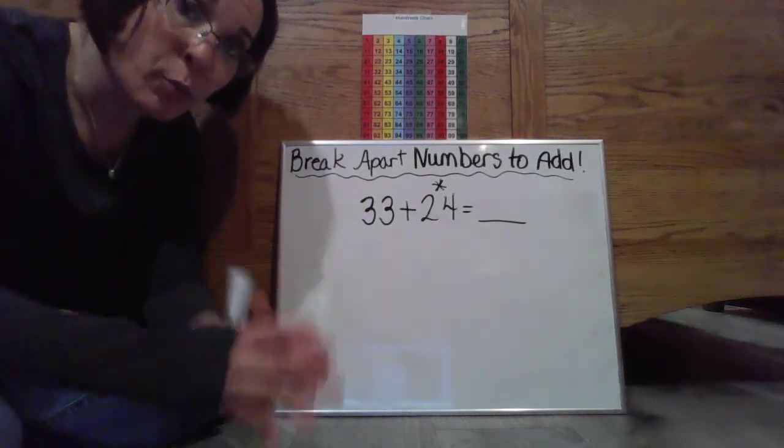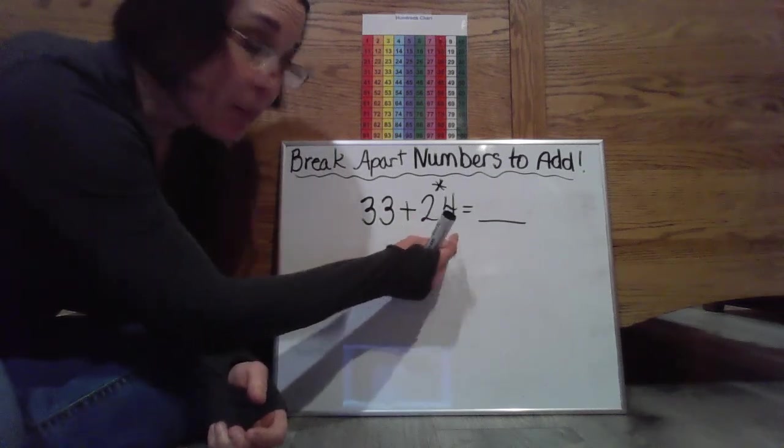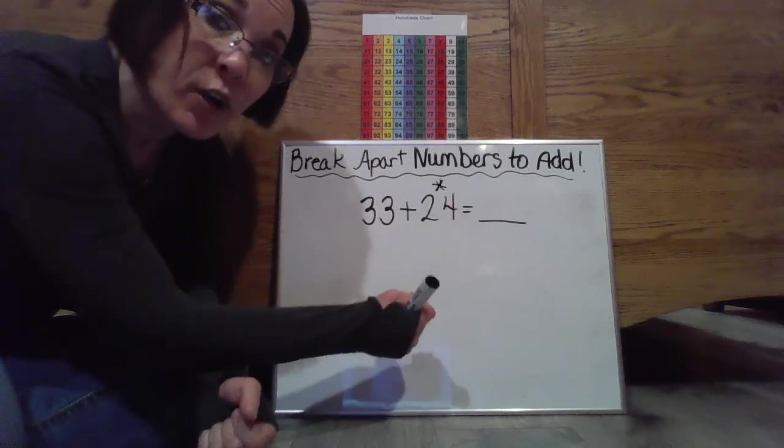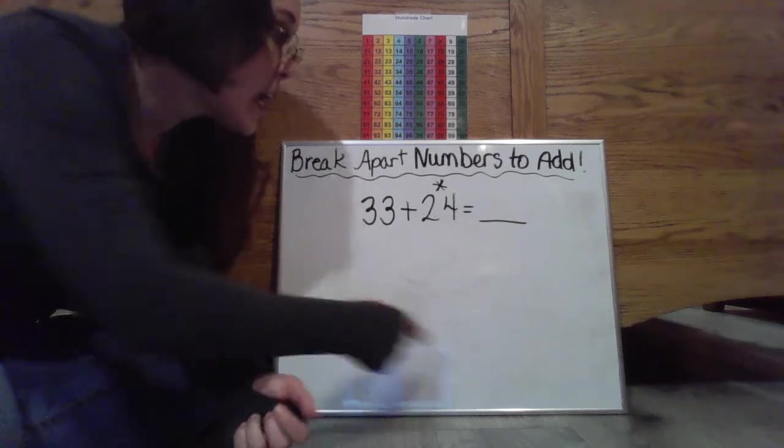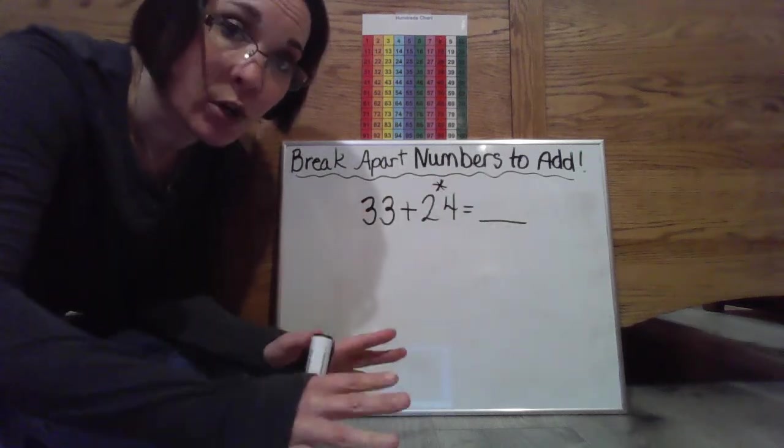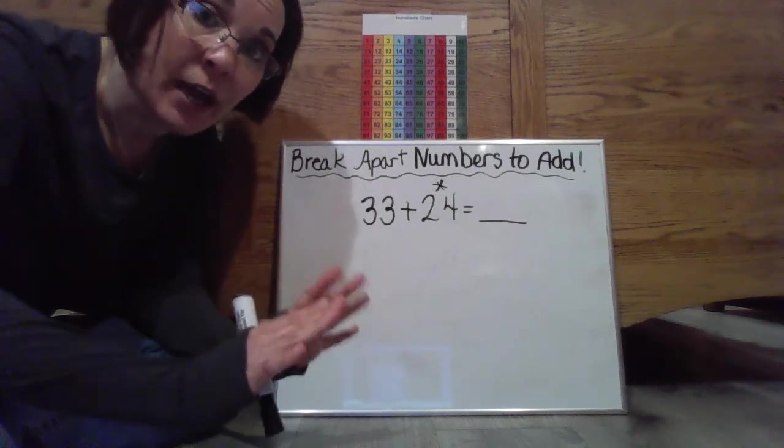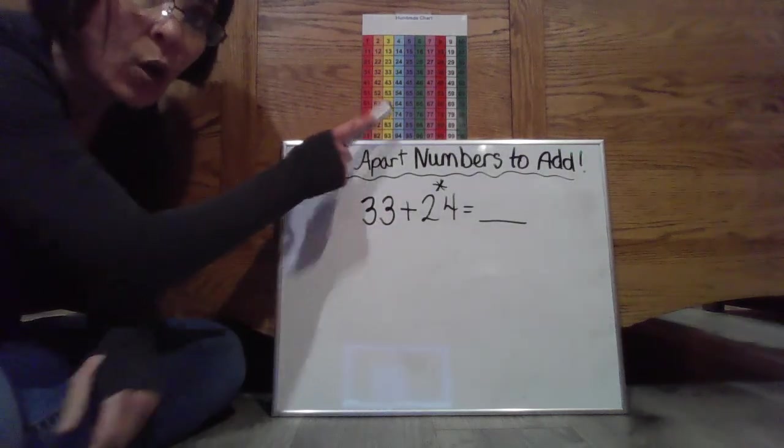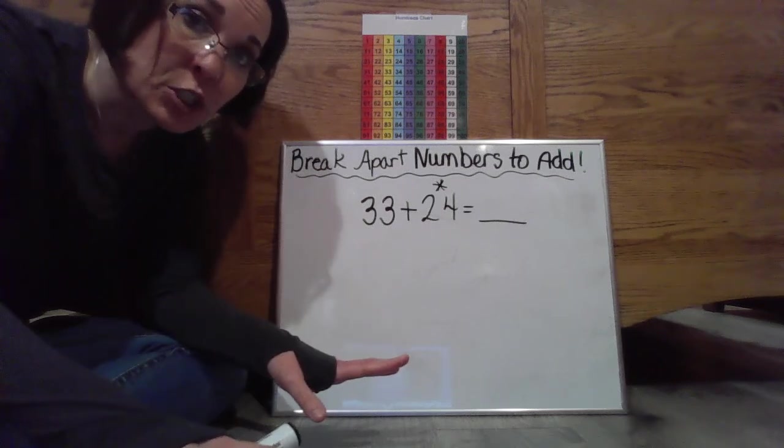So what we're going to do here, the break apart method means I'm going to take the smaller number and I'm going to show the value of each one of those digits. I'm going to make a simpler number sentence in order to figure out what our complete sum or solution is to the number sentence and we're only going to be focusing on addition here. So we could also go back to our hundreds chart just to double check our work.